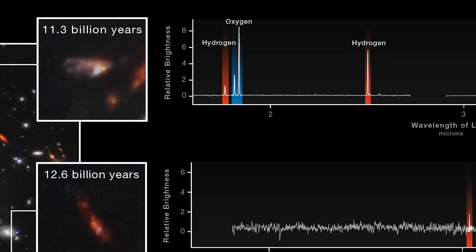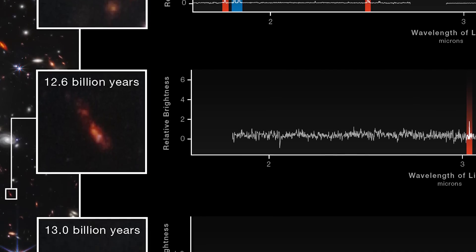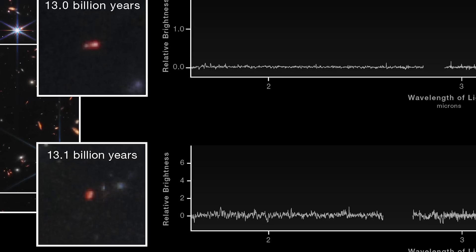The examples shown here range in age from 11.3 billion years, all the way back to 13.1 billion years, making these galaxies some of the most distant ever observed.